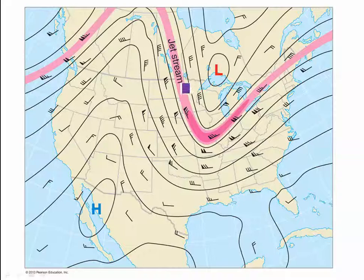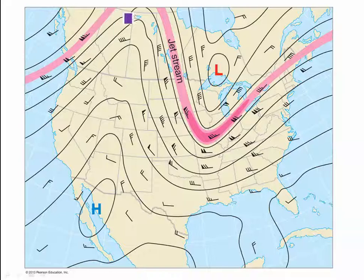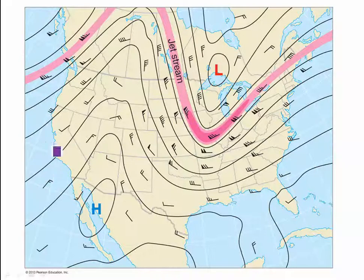The jet stream is shown here by this pink shaded area, and we're looking at a map of springtime into early summer. We know that as temperatures warm, the jet stream moves up from 300 millibar to the 200 millibar height. This is a pretty common pattern over the North American continent for this time of year.